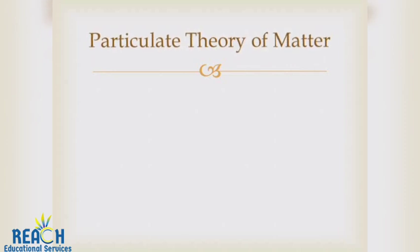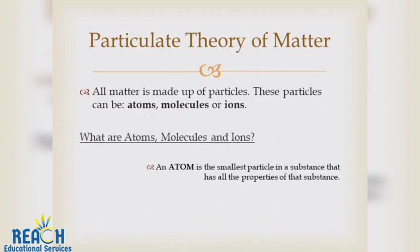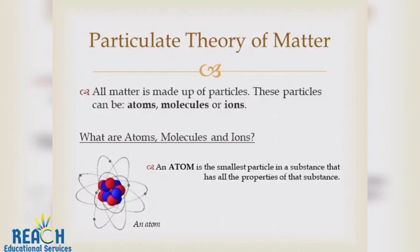Now that we have an understanding of what matter is, we can get into the particulate theory of matter. This theory has various principles, one of which states that all of matter is made up of particles. These particles can be either atoms, molecules, or ions. We're going to briefly go into what each of these things are. An atom is the smallest part of a substance that will have all of the characteristics of that substance. For example, if we have the element carbon, all the atoms of carbon are expected to have similar properties to the element carbon.